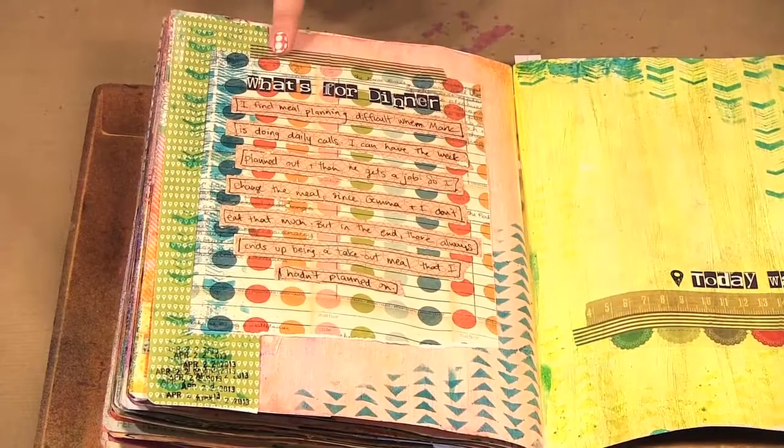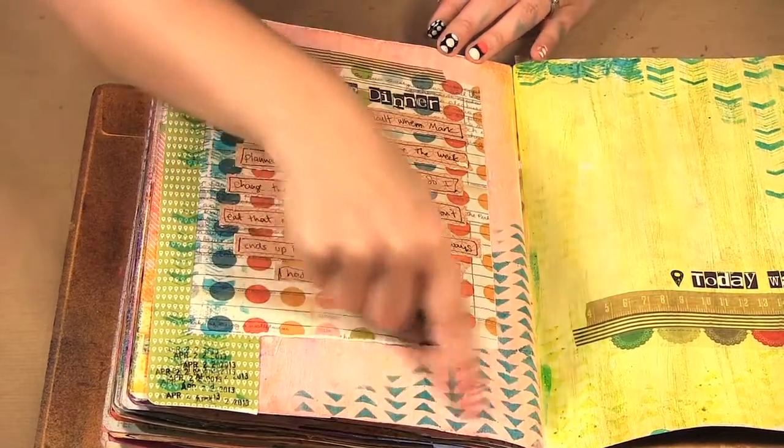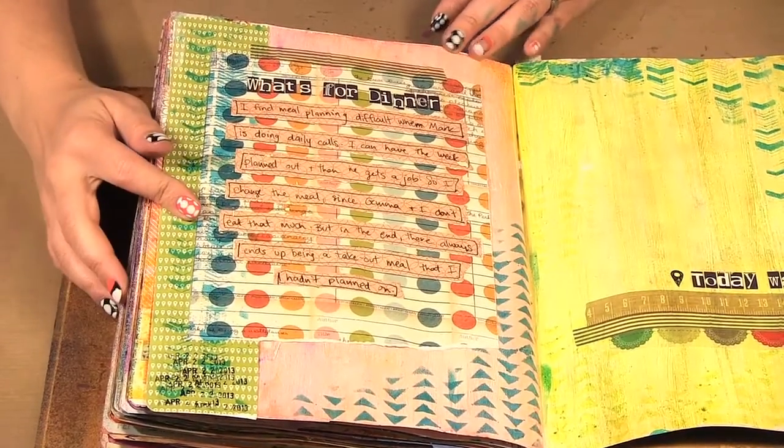So I put a bit of the tape there and I cut out the paper in strips for my journaling and then these are some of the new masks and stencils that they have that I'll be talking a bit more about later.